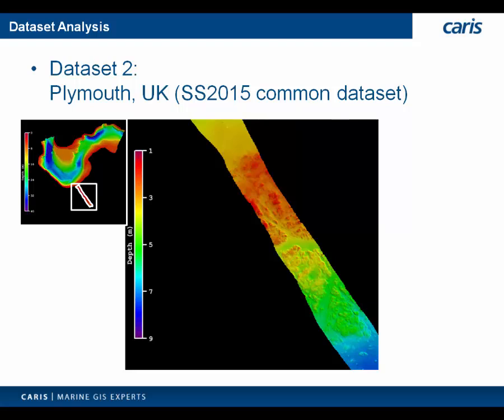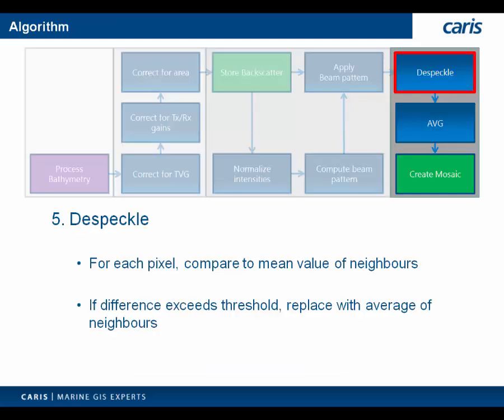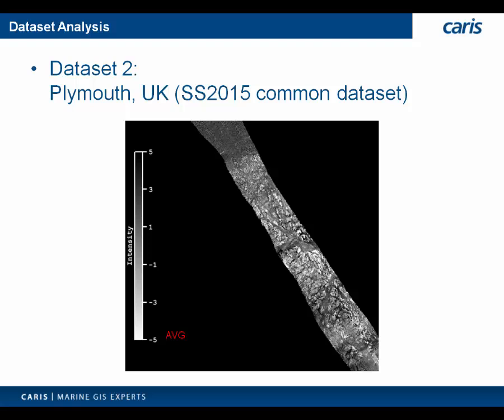Switching over to the shallow survey 2015 dataset, we have a long stretch of two lines trailing out from the main survey area over some interesting rocky seabed. Looking at the backscatter, we see some residual artifacts in the imagery — these are the result of a change in the sediment acoustic response over this region. After applying the beam pattern, we also apply a de-speckle function to clean up the image before mosaicking. We look at each pixel, and if the difference between the current pixel and the mean value of its neighbors exceeds a certain threshold, we replace that intensity with the mean value from those same neighbors. The last step is applying an angle-bearing gain correction, although this correction is optional. We calculate the intensity curve as a function of incident angle, average it over a window size supplied by the user, and normalize the curve using an average of the values between 30 and 60 degrees, giving us the final artifact-free image.